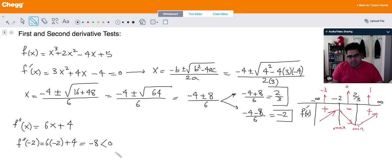It means the function is concave down, and whenever you have a downward concavity, that means the point corresponds to a maximum. And if I plug in 2/3 into the second derivative, I get 6 times 2/3 plus 4, I would get 8, which is positive. It means upward concavity, and this corresponds to a minimum.